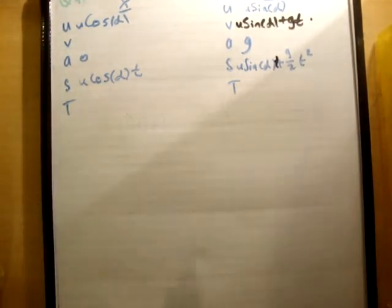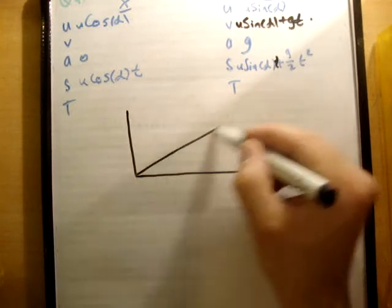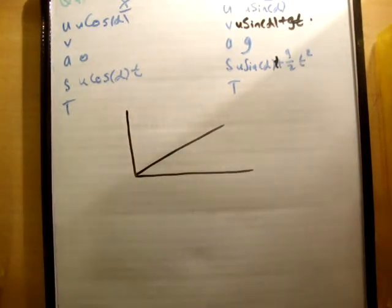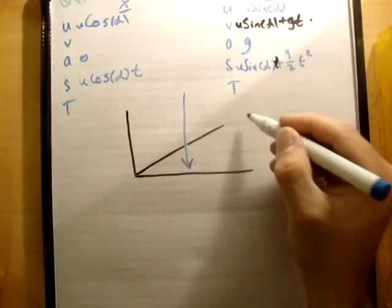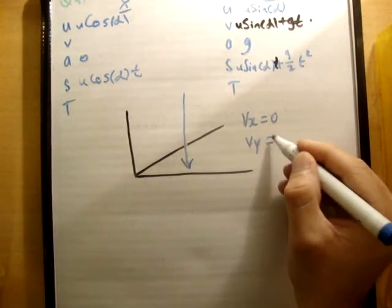It says, if the particle lands vertically. Now, a couple of things here. If the particle lands vertically, say if this is the incline on our xy plane. Now if it lands vertically, like this, then it means that v sub x is equal to 0, and v sub y is non-zero.